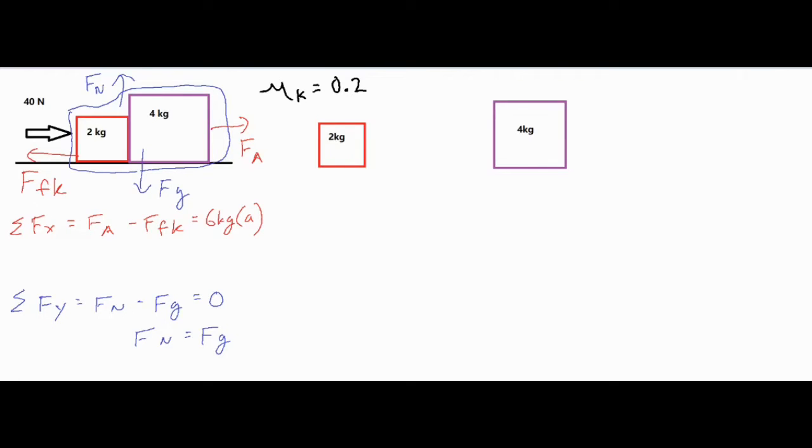For this setup we're going to plug in some more values. The applied force is 40 newtons, and the force of kinetic friction is mu, the coefficient of kinetic friction, times the normal force. The coefficient of kinetic friction is 0.2, and the normal force is the same as the force of gravity, which is mg, mass times 9.8.